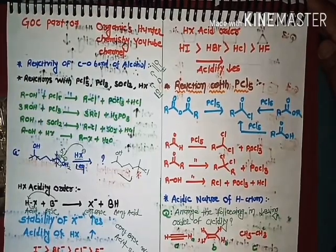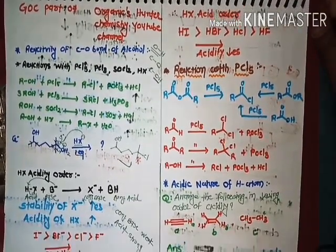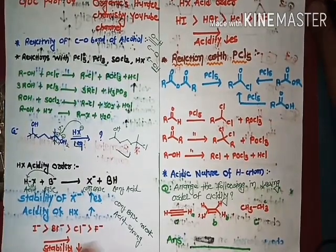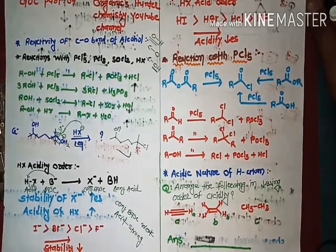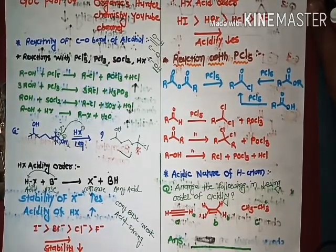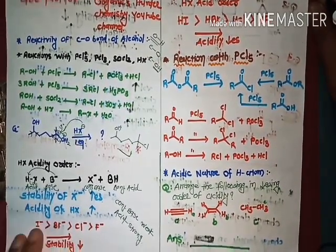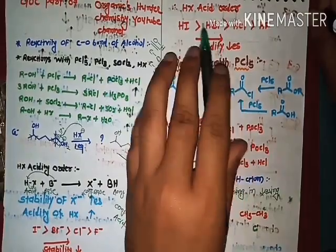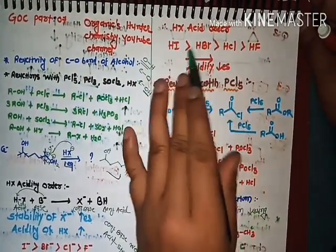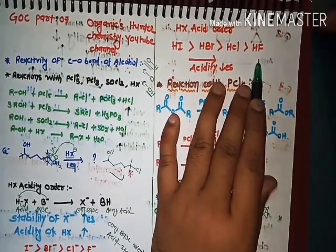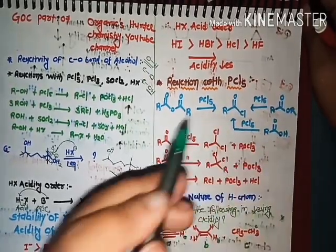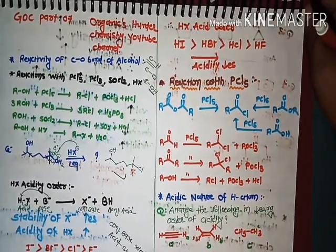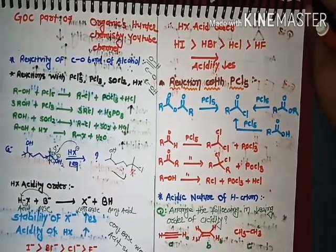Based on this, we can decide the acidity of any acid. For the hydrogen halides F, Cl, Br, I — going left to right, stability decreases. I minus is the most stable. So the most acidic is HI, then HBr, then HCl, then HF. Going left to right, acidity decreases. Now let's start with reaction of alcohol with PCl5 and reaction of carbonyl compounds with PCl5.